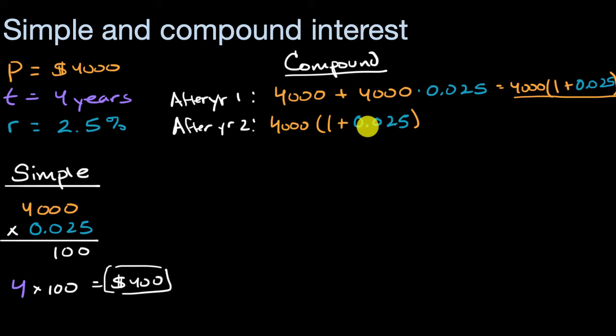And then we're going to multiply this amount times one plus 0.025 again. And so you can imagine if we go all the way to year four, it's going to be 4,000 and we're essentially going to be multiplying this thing by itself four times. So it's going to be times one plus 0.025 to the fourth power.